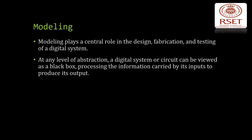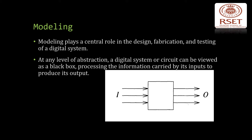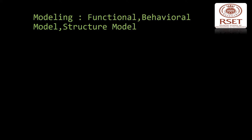Starting with the basic concepts: at any level of abstraction, a digital system or a circuit can be viewed as a black box which processes the information carried by its inputs to produce its output. This figure depicts that, where I denotes inputs and O denotes the set of outputs. This transformation occurs over time. Depending on the level of abstraction, the behavior can be specified as a mapping of logic values or of data words.